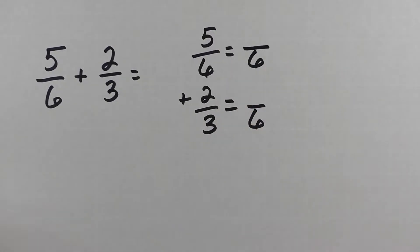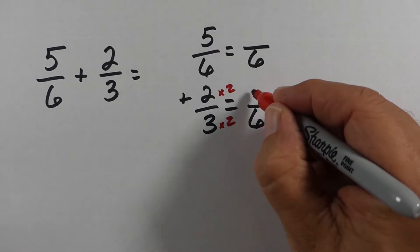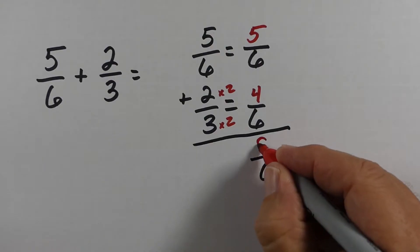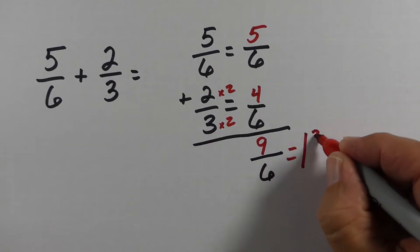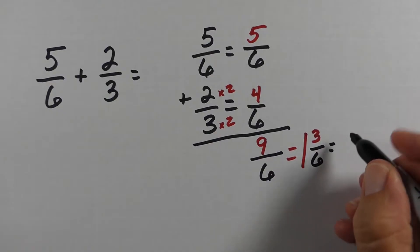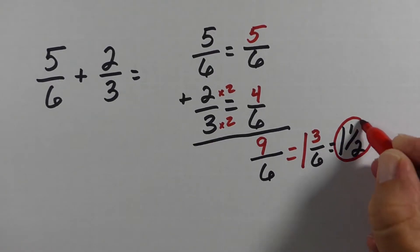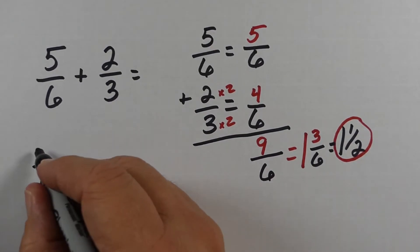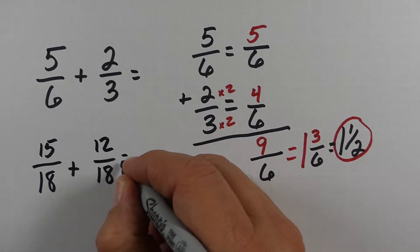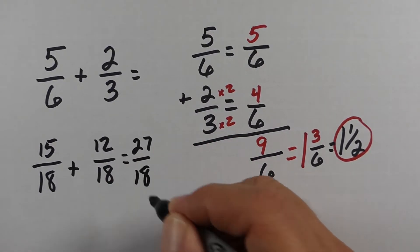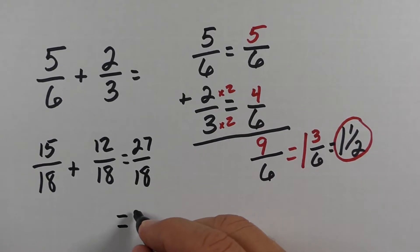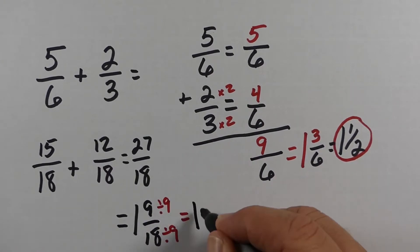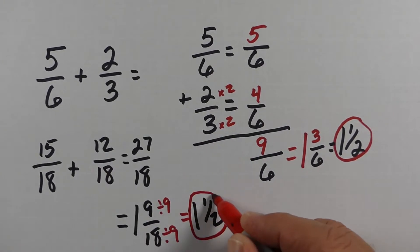For 5/6 plus 2/3, 6 is our common denominator. The top fraction doesn't need to change. For the bottom, multiply both by 2. We end up with 9/6. 6 goes into 9 once with a remainder of 3, so it's 1 and 3/6, which is the same as 1 and 1/2. We could have used 18 as the denominator by multiplying 6 times 3, and we would have ended up with 27/18, which equals 1 and 9/18, which also equals 1 and 1/2 — the answer is the same whichever way you do it.